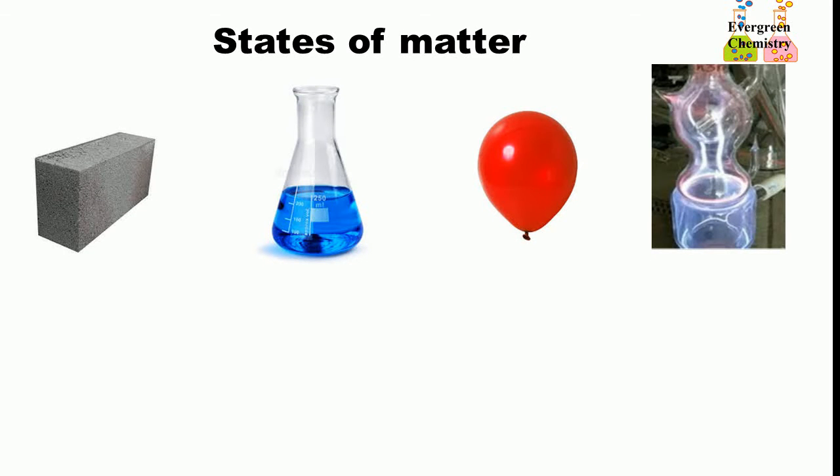States of matter means it's a type of classification of the physical form of existence. The first one is solid, the second one is liquid, the third one is gas, and the fourth one is plasma. They are the four natural states of matter.